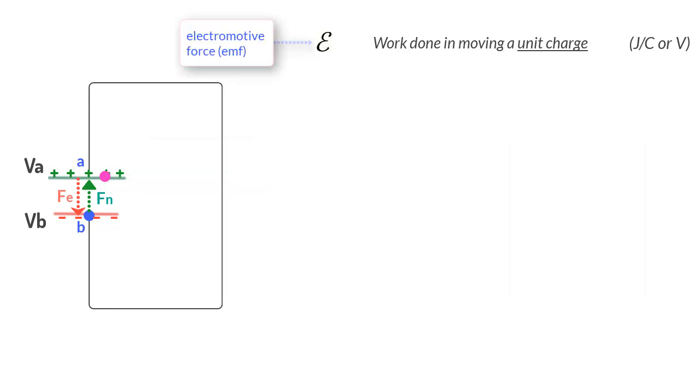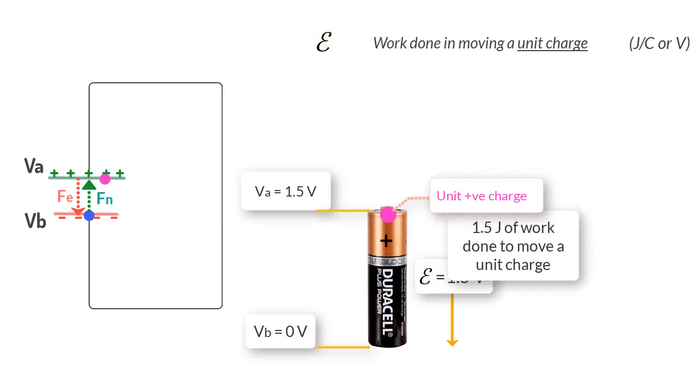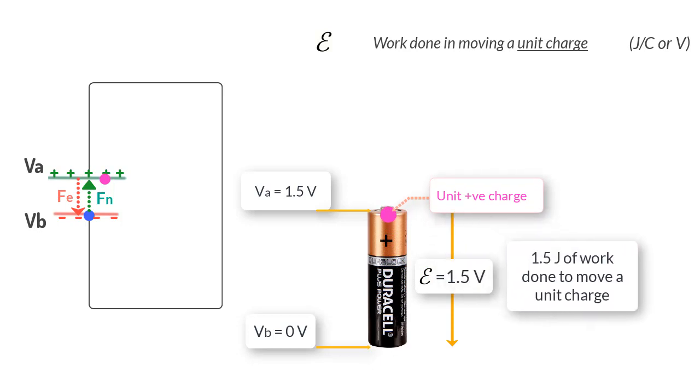But it is not really a force as we just saw but traditionally it has been termed that way. So when we say that a battery has an EMF of 1.5 volts, what we mean is that the battery does 1.5 joules of work to move a unit charge inside the battery from one terminal to the other, or more accurately from a place of lower potential to higher potential.